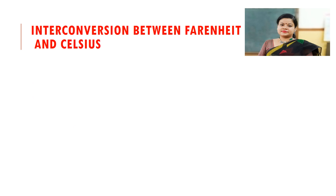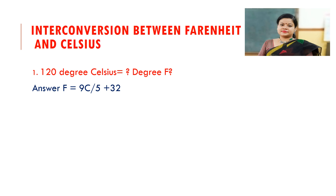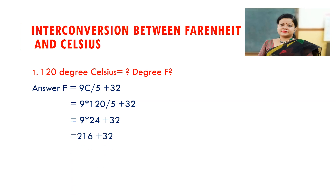Let's start the inter-conversion between Fahrenheit and Celsius. Question: 120 degree Celsius is equal to what degree Fahrenheit? We know from the formula F = 9C/5 + 32. Putting C = 120: 9 × 120 / 5 = 216, plus 32 equals 248. So 120 degree Celsius equals 248 degree Fahrenheit.